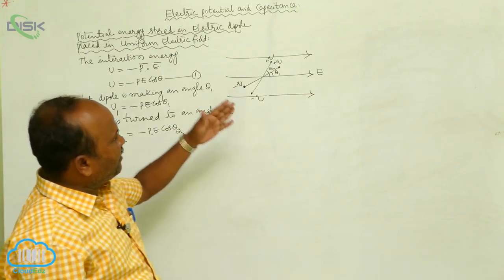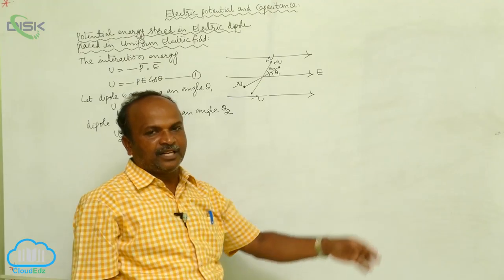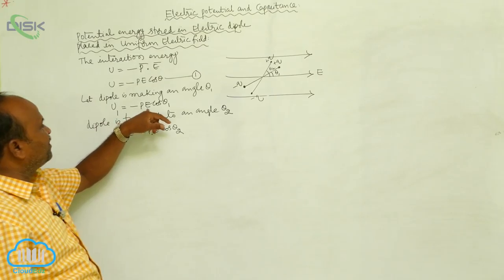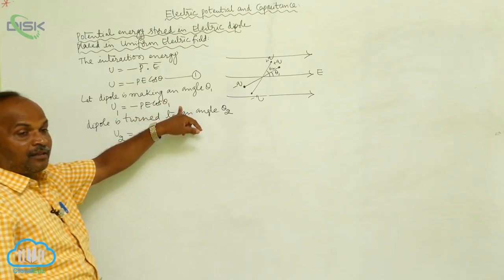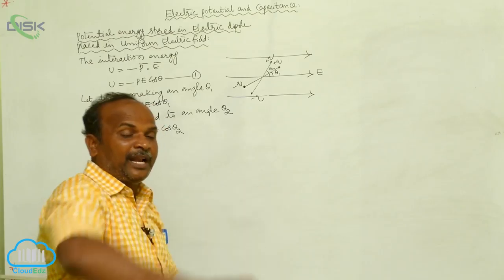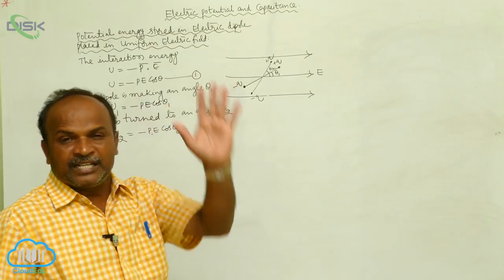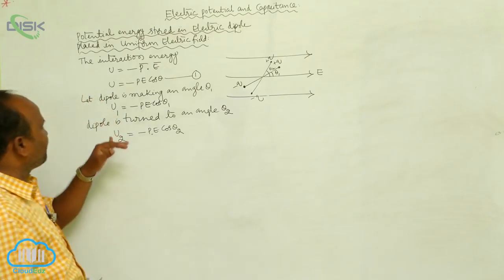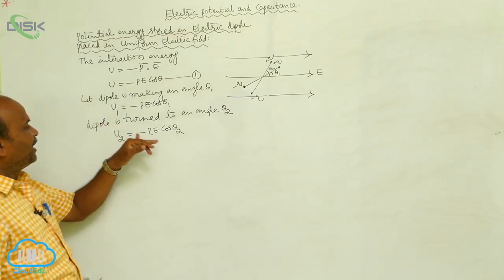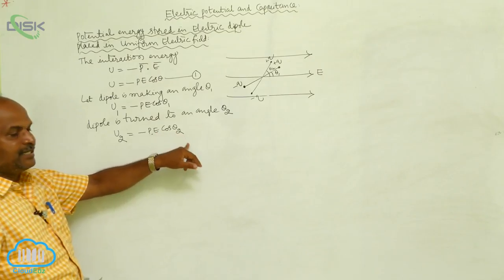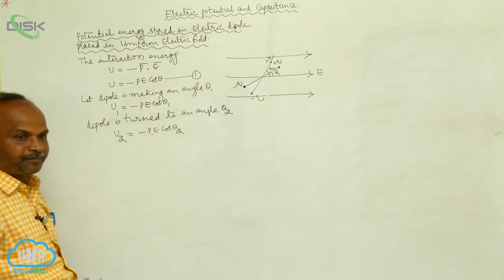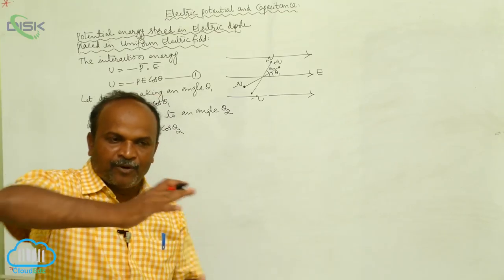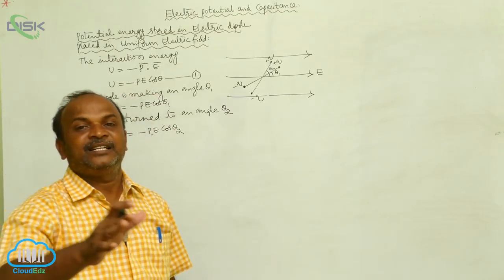Whenever the dipole is making an angle theta 1 with respect to the electric field intensity, the interaction energy U₁ is equal to minus PE cos theta 1. When the same dipole is rotated up to an angle theta 2, the interaction energy becomes minus PE cos theta 2. As the angle changes and the dipole is turned, the interaction energy changes.